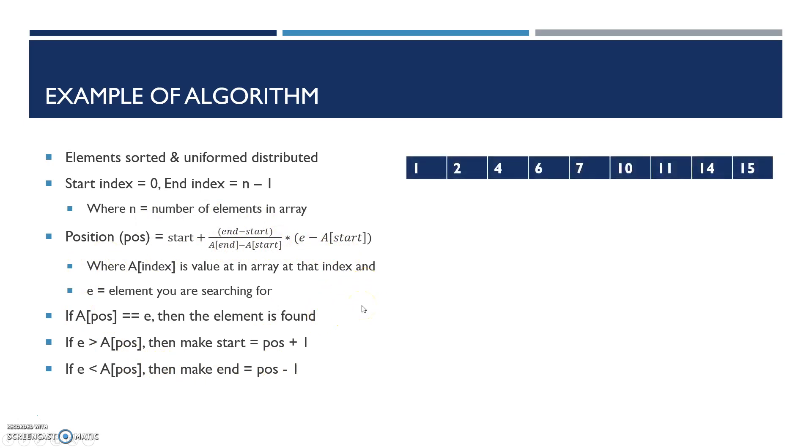Let's say you have an array with 9 numbers: 1, 2, 4, 6, 7, 10, 11, 14, and 15. And let's say you're looking for the element 4. The first step, according to our algorithm, is to start with index 0 and end with n minus 1. We have 9 elements, subtract 1, and that's 8.